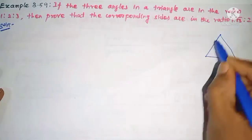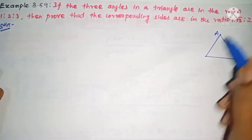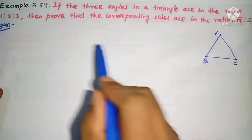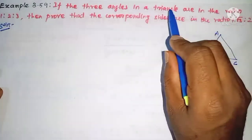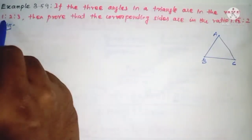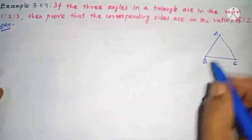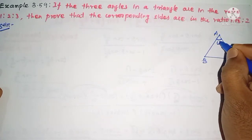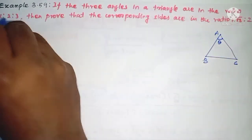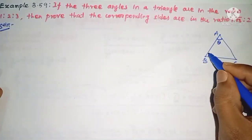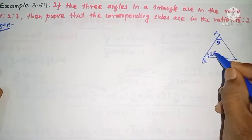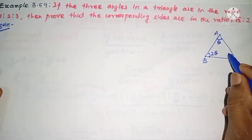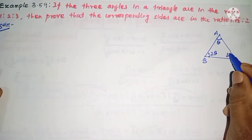This is the triangle. I will name it A, B and C. The angles are in ratio — the first angle is θ, the second angle is 2θ, and the third is 3θ.